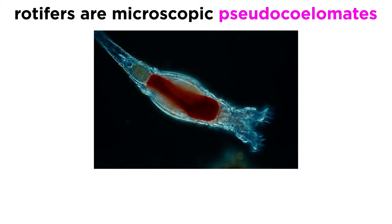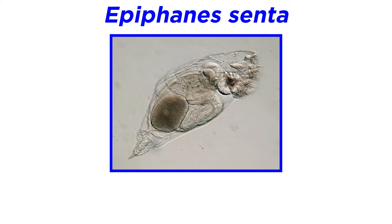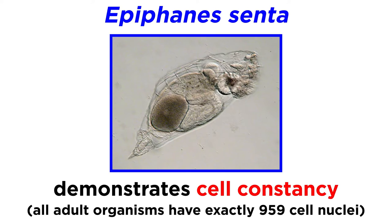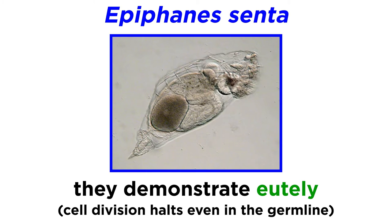Rotifers are microscopic pseudocoelomates. They demonstrate eutely, meaning that they cease undergoing mitosis once they complete their embryonic development. Some species, such as Epiphanes senta, also demonstrate cell constancy. All adults of this species always have the same number of cellular nuclei: 959. Other species vary considerably in their final adult cell count. This is a bit different than other eutelic animals, like the nematode C. elegans, which have a fixed number of somatic cells but continue to divide their germline, also known as sex cells, as adults. This is not the case in rotifers, as they seem to stop cell division even in the germline.